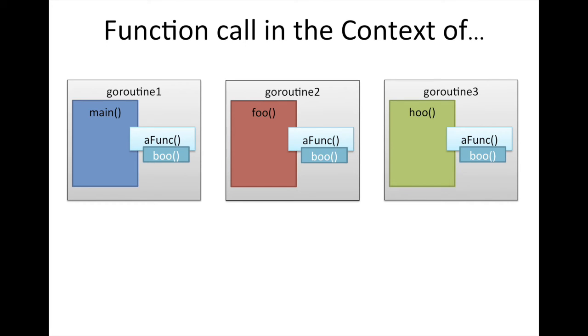The important thing is that if your goroutines, whether they be main or any other one you launch, call functions, those functions are invoked in the context of the function that called them, hence the caller of that function. And the function that's being called, in this case, let's say aFunc, it's called the callee. Boo, when it's called by aFunc, boo is the callee, aFunc is the caller. When you're looking at aFunc, it is the callee, and the caller is main. So you can see that a function can both be a caller and a callee.